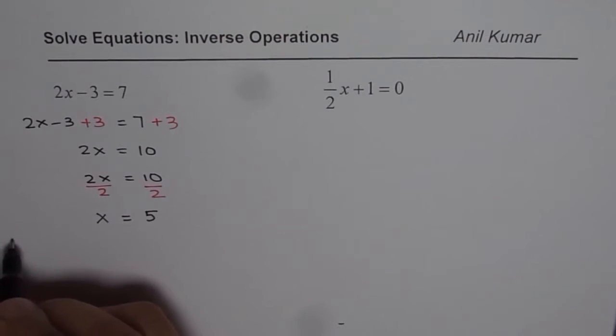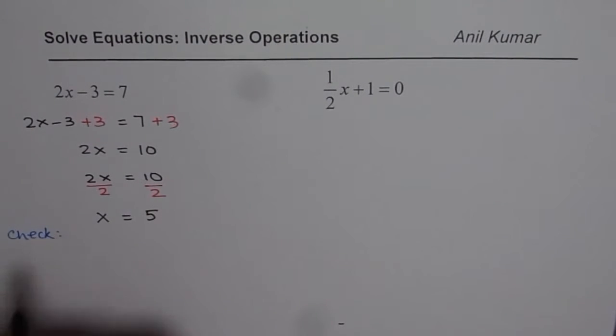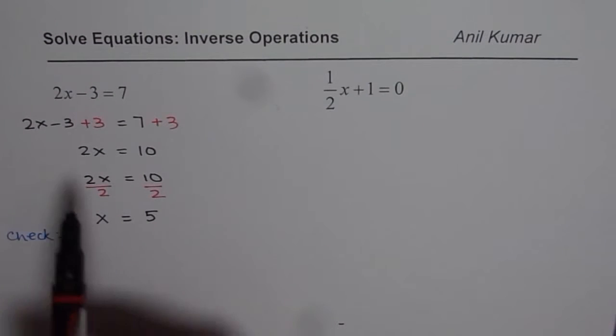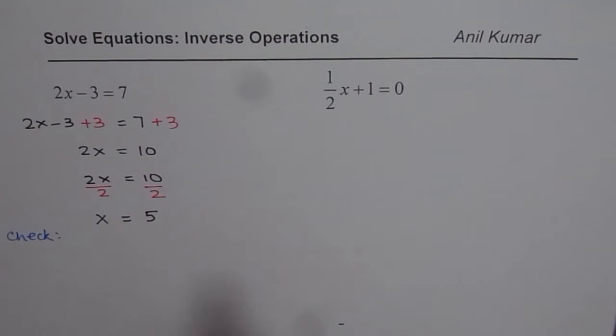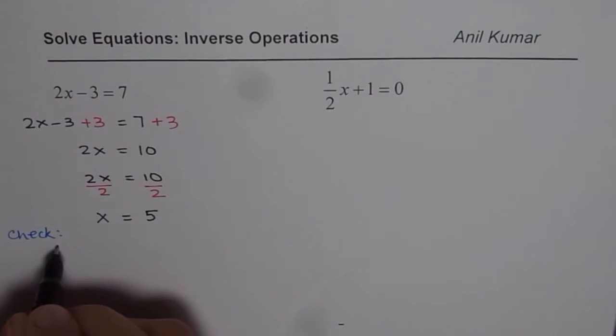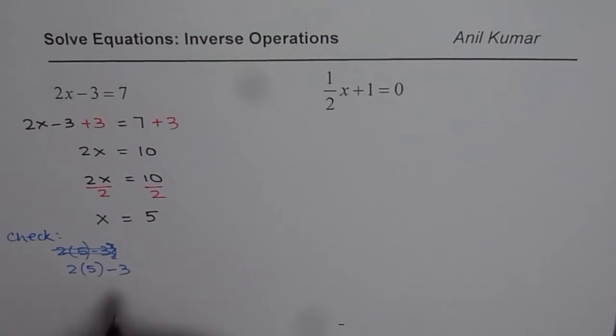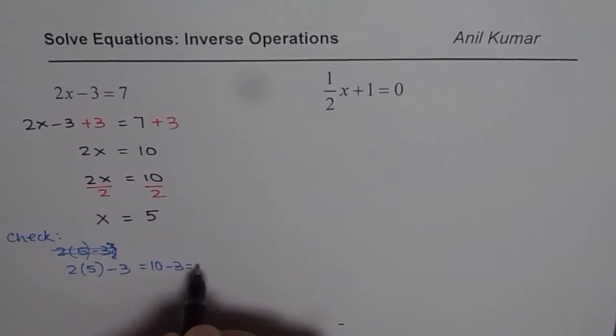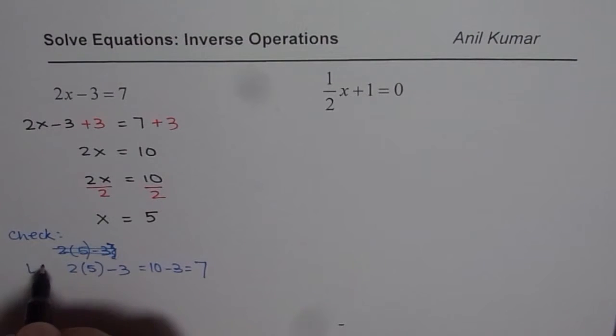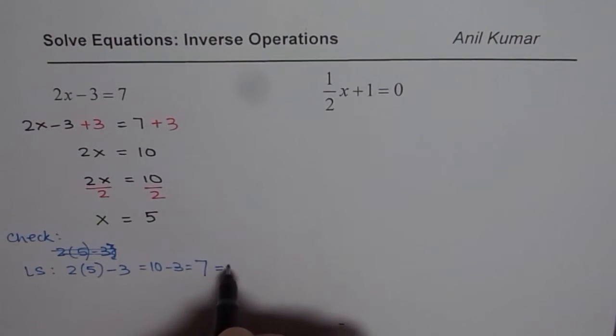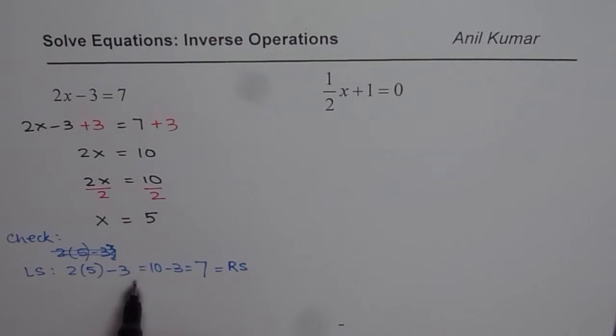At times you may be required to check also. You can check the solution. I will check it for this equation. x equals 5. Let us substitute 5 in the equation on the left side. So if I substitute 5 here I get 2 times 5 minus 3. So we get 2 times 5 in bracket minus 3. 2 times 5 is 10. So we get 10 minus 3 which is indeed 7, same as the right side. When both sides are same for a particular value we say that that is the solution of the equation.